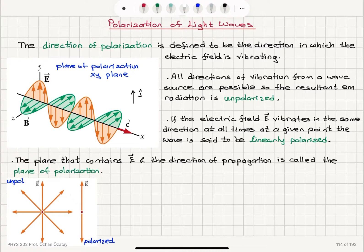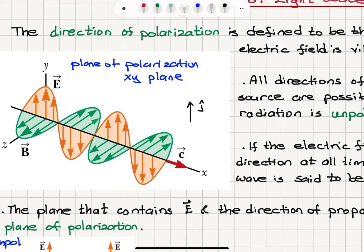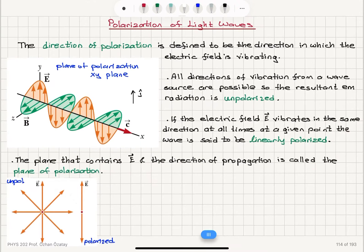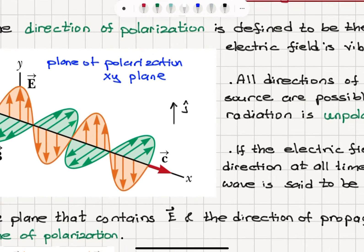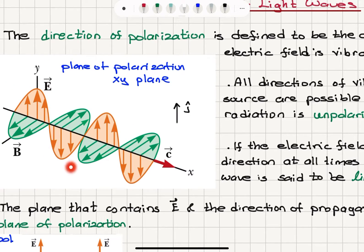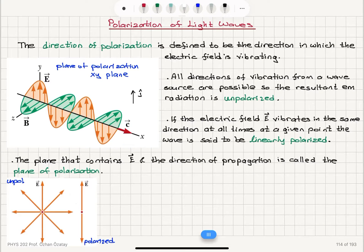Polarization of light waves. Consider a plane electromagnetic wave whose electric field component is oscillating on the y-axis and magnetic field component is oscillating on the z-axis. The electromagnetic wave travels with the speed of light in the positive x direction. The direction of polarization of this electromagnetic wave is defined to be the direction in which the electric field is vibrating. Since the electric field is vibrating on the y-axis, this plane wave is polarized in the j-hat direction.